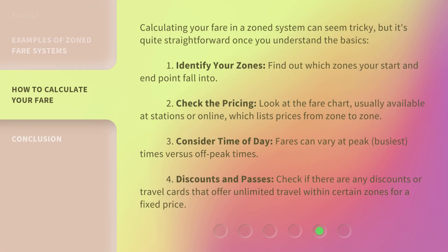Calculating your fare in a zoned system can seem tricky, but it's quite straightforward once you understand the basics. One: identify your zones — find out which zones your start and end point fall into. Two: check the pricing — look at the fare chart, usually available at stations or online, which lists prices from zone to zone.